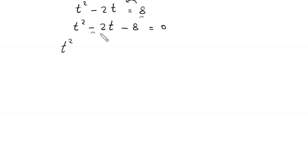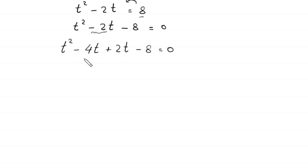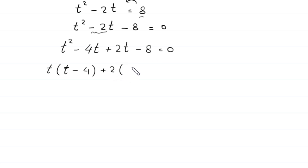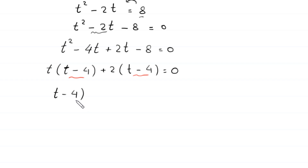This is a quadratic equation and is factorable. We split negative 2t as negative 4t plus 2t, giving t squared minus 4t plus 2t minus 8 equals 0. From the first two terms we factor out t, leaving t minus 4, and from the last two terms we factor out 2, leaving t minus 4.